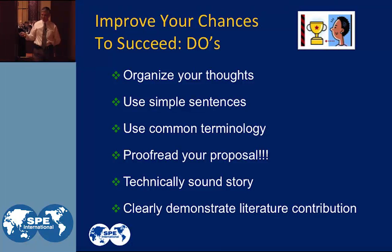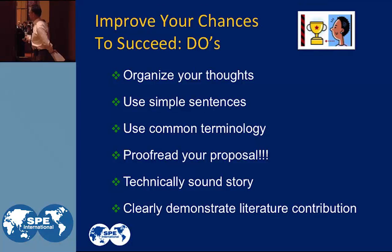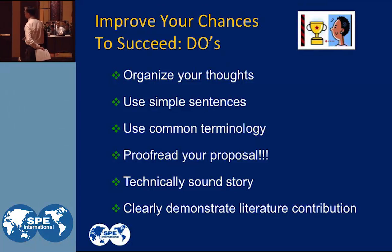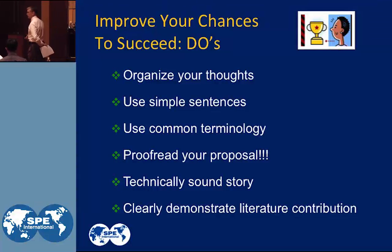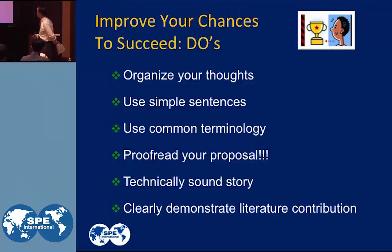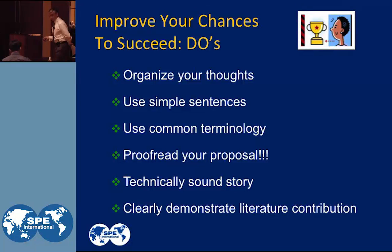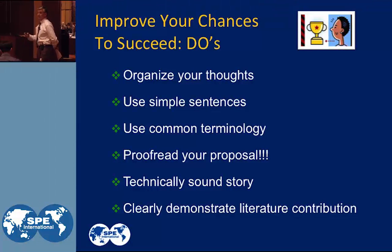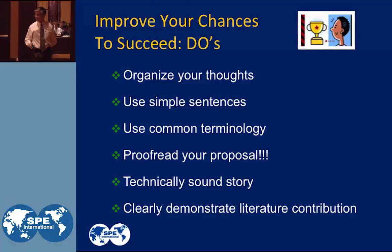How do you improve your chances of getting the abstract accepted? Here are some of the do's: organize your thoughts when you write your paper; use simple sentences; use common terminology. Terminology that's only common to your company may not be common to the rest of the industry, so if you have to use it, explain it. I'm talking about abbreviations and acronyms, things like that.